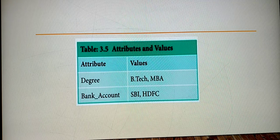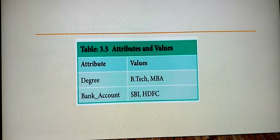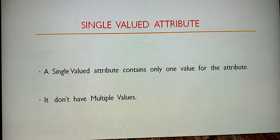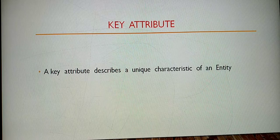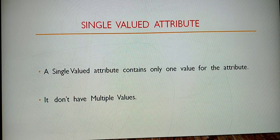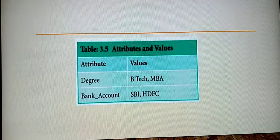To summarize, we have covered the introduction to attributes and the five types: key attribute, simple attribute, composite attribute, single-valued attribute, and multi-valued attribute.